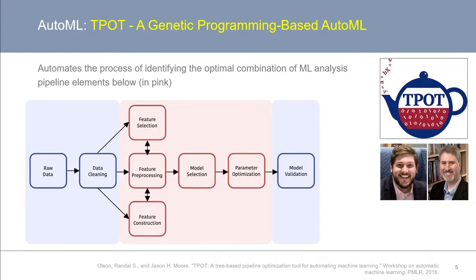Each candidate pipeline is an attempt to determine the optimal combination of elements of a machine learning pipeline, including feature selection, feature preprocessing, feature construction, model selection, and hyperparameter optimization. To date, the TPOT tool is still actively being expanded and improved. If you want to read more about TPOT, try it for yourself, or watch out for future improvements, check out the following link to its GitHub repository.